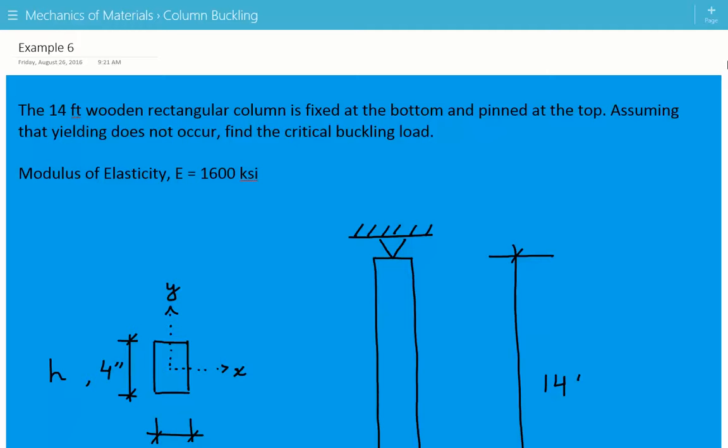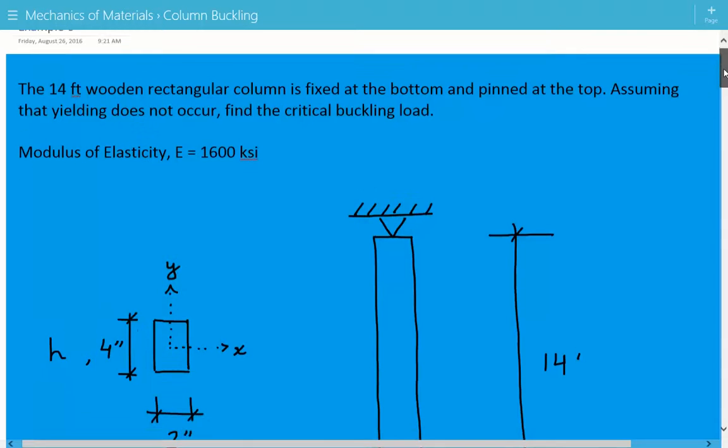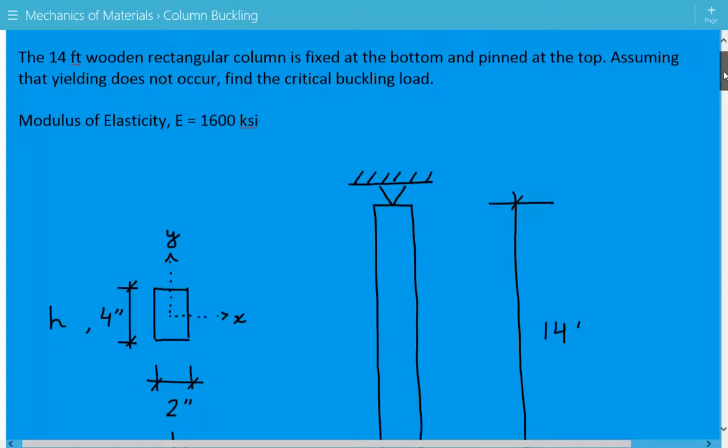The problem statement is the 14 feet wooden rectangular column shown below is fixed at the bottom and pinned at the top. Assuming that yielding does not occur, find the critical buckling load. The modulus of elasticity for the wood is 1600 KSI.